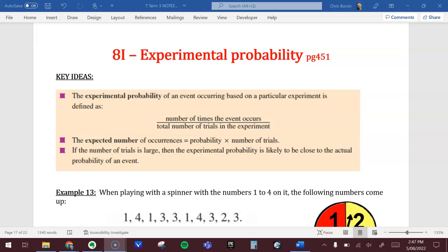The experimental probability of an event occurring is based on particular experiments. You're actually doing it. The other one was theoretical - how many would we expect to get? Well, this time we're going to do it. We're going to do the trials. To figure that out, we divide the number of times the event occurs by the total number of trials.